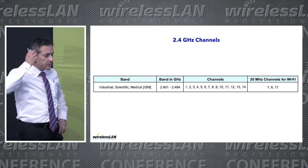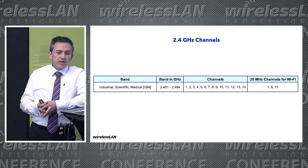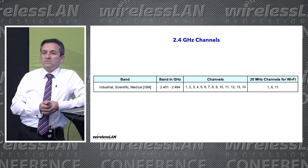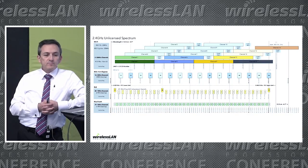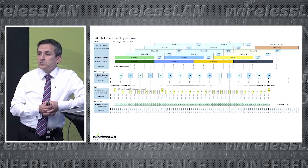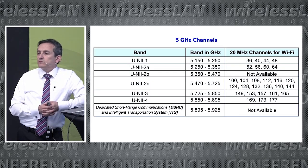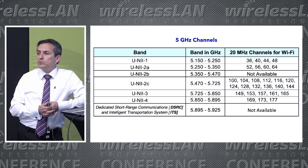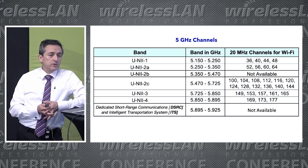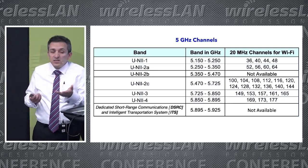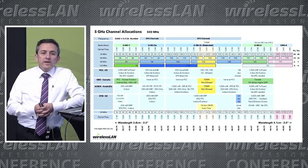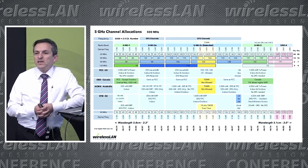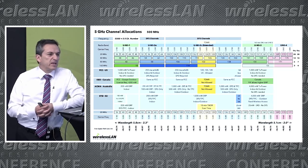Let's start with the basic stuff. In 2.4GHz, we had primary channels — channels 1, 6, and 11, nothing secret about that. We share spectrum with other technologies. In 5GHz, we have mostly harmonized spectrum everywhere. Notice at the end of 5GHz there's dedicated short range communications and the intelligent transportation system — that spectrum is for them, not for us. We've seen this chart for many years, with the addition of UNII-4 that was added later. Many people didn't care about it, but it's there, assigned to us, and we could use it.